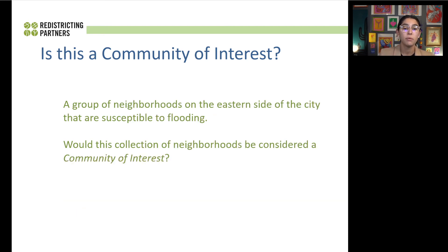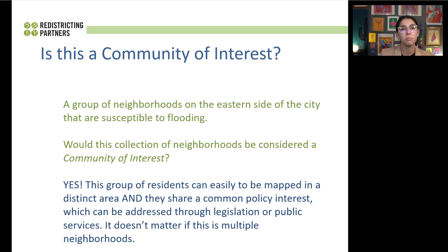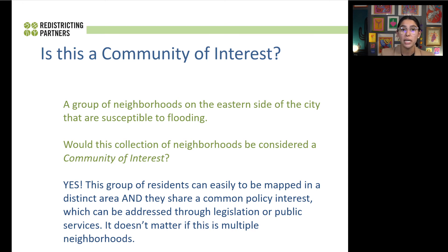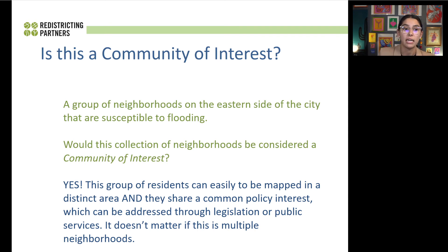The second question: a group of neighborhoods on the eastern side of the city that are susceptible to flooding — would this collection of neighborhoods be considered a community of interest? Absolutely yes. This group of residents can easily be mapped. They're in a distinct area and share a common policy interest which can be addressed through legislation. This community of interest could be multiple neighborhoods, a singular location, or a larger portion of the city. This is a community of interest we've heard testimony about throughout the outreach process, and is unique to that area and neighborhood.